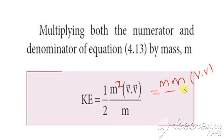So divided by M as it is, this can also be written as MV into MV divided by M, and we have the half term.